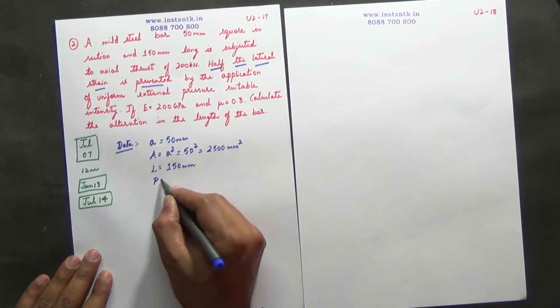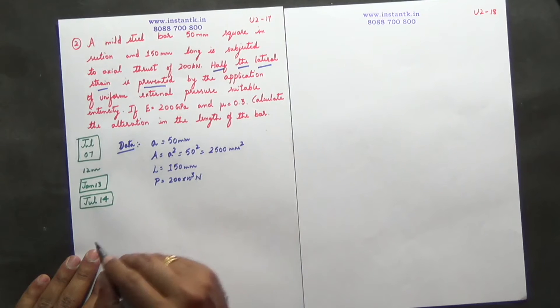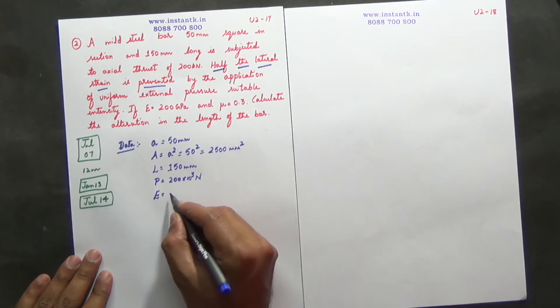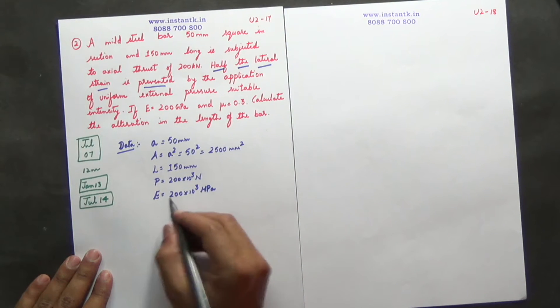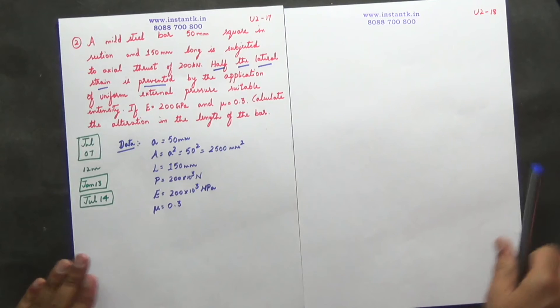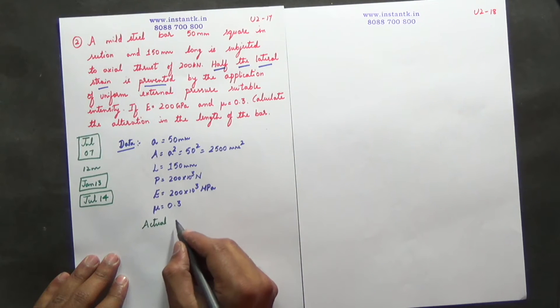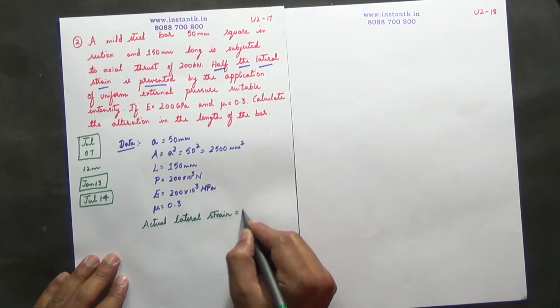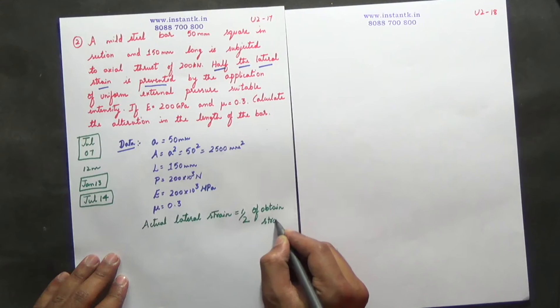Subjected to axial thrust P is equal to 200 into 10 power of 3 Newton. E is equal to 200 into 10 power of 3 MPa. Mu is equal to 0.3. And he has given one thing: actual strain or actual lateral strain is equal to half of obtained strain. This is very important.